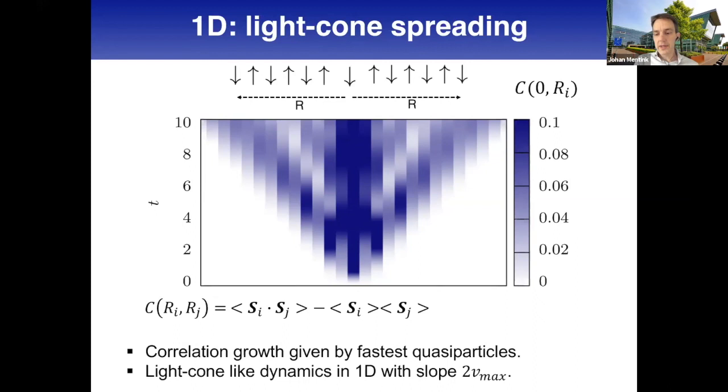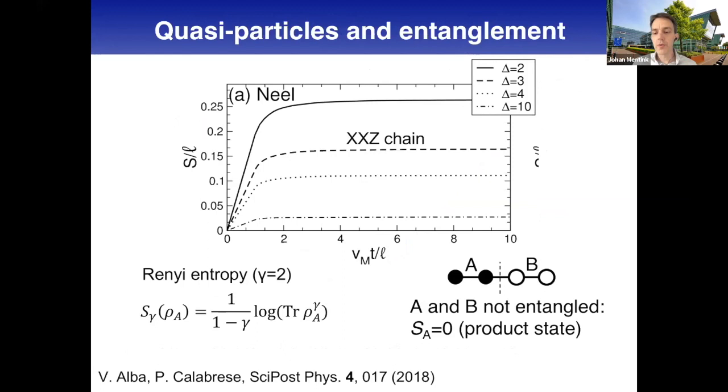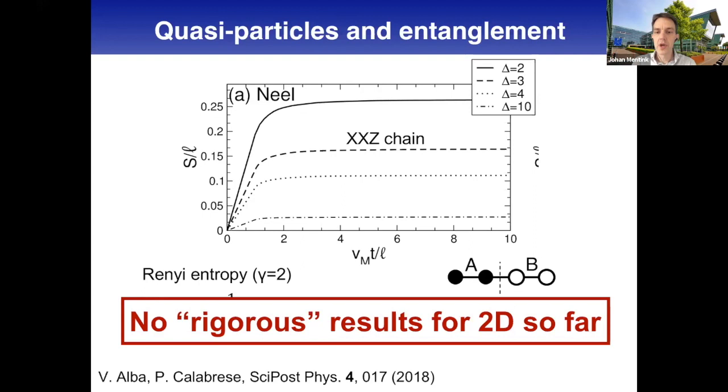In one dimension we know this relation between spreading of spin correlations is intimately related to the increase of entanglement entropy. From a fundamental perspective, if we can study this Heisenberg system, the question is: how is the relation between spreading of correlations and dynamics of entanglement in the two-dimensional Heisenberg model, for which no rigorous results exist that you can accurately and systematically improve?